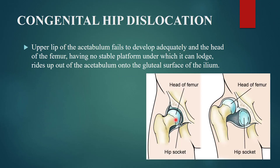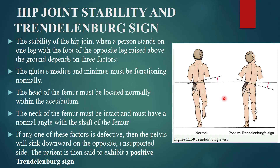Congenital hip dislocation occurs when the upper lip of the acetabulum fails to develop adequately. The head of the femur, having no stable platform in which to lodge, rides up out of the acetabulum onto the gluteal surface of the ilium. This is congenital dislocation of the hip joint.